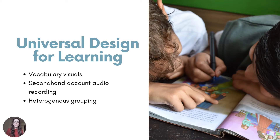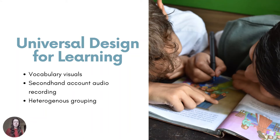Three UDL methods are embedded in the lesson for assisting students with learning challenges. This lesson incorporates vocabulary visuals on that resource we were just talking about. It also includes a second-hand account audio recording for those who may need help with reading comprehension, as well as heterogeneous grouping, which means students who struggle are paired with students who may be doing better in the subject. That way we can have scaffolding, zone of proximal development, teamwork — building each other up — which has been proven to help individuals who need a little bit more assistance.